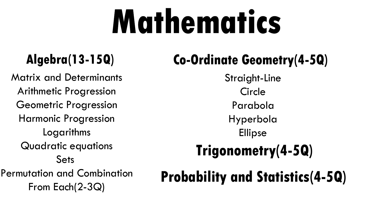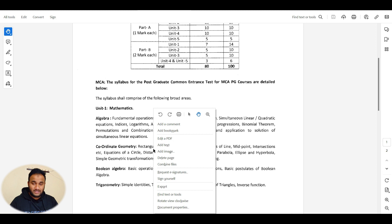From probability and statistics you will get four to five questions. From boolean algebra, they may ask about basic operations, evaluation of boolean expressions, and basic postulates. Let's look at mathematics first and then move to computer science.